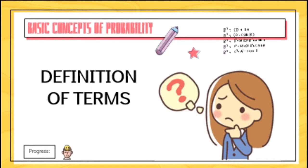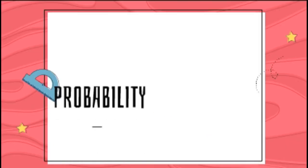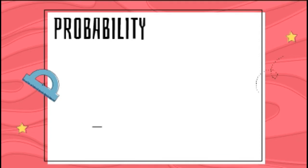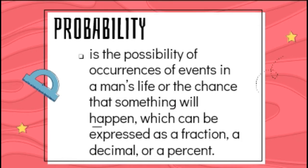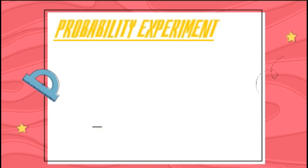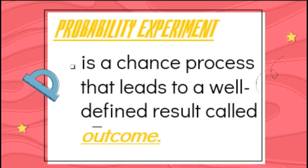Now let's discuss first the definition of terms. Probability is the possibility of occurrences of events in a person's life, or the chance that something will happen, which can be expressed as a fraction, a decimal, or a percent. Probability Experiment is a chance process that leads to a well-defined result called outcome.